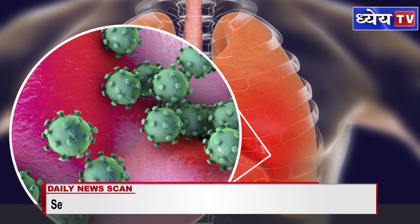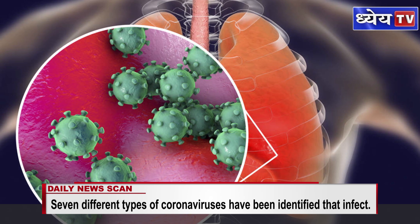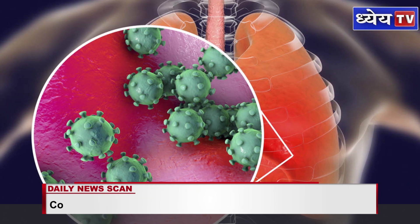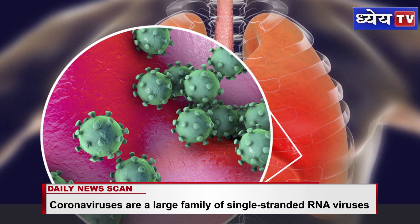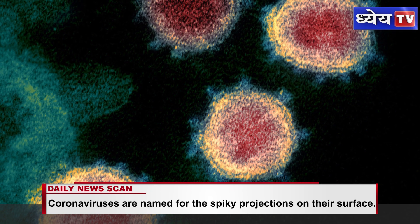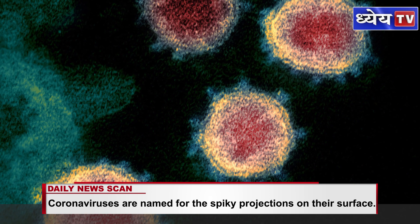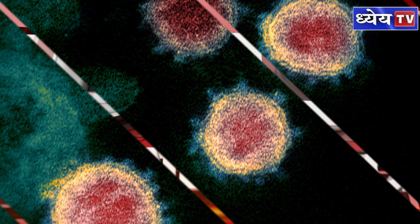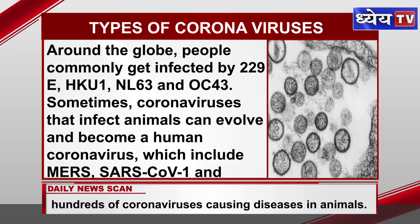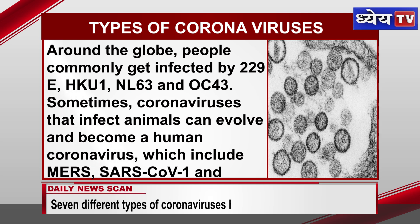The classification of viruses is based on their phylogeny, which reflects how these virus strains evolved from their common ancestors. Whenever a virus newly emerges, its classification depends on how it relates to known viruses — whether it is distinct enough to be called a new species or belongs to an existing one. For instance, SARS-CoV and SARS-CoV-2 are genetically linked. Around the globe, people commonly get infected by 229E, HKU1, NL63 and OC43. Sometimes, coronaviruses that infect animals can evolve and become human coronaviruses, which includes MERS, SARS-CoV-1 and SARS-CoV-2.